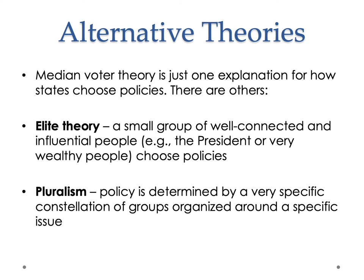Alternate theories to the median voter theory are elite theory and pluralism. Elite theory is the idea that a small group of well-connected and influential people choose policies — that politicians are not responsive to the average voter but to elites. Schools are a good way to think about elite theory. The median voter theory would say public schools teach what the typical voter wants. Elite theory says no — schools don't teach what the average person wants to learn; they teach what leading scholars think is legitimate, what elites say is important to know. Schools may teach many things that people on average don't want to learn, but insofar as powerful people say it's important, schools continue to teach it.